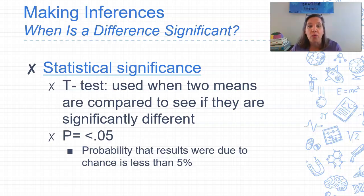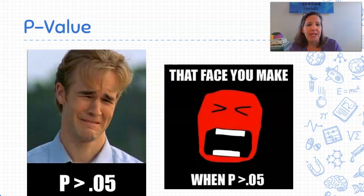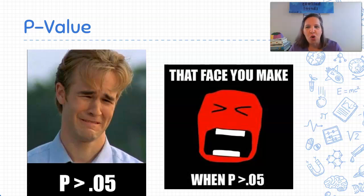So the p stands for probability. The probability that our results were due to chance is less than 5%. So what that's saying on the flip side, 95% sure my results are because variable A caused variable B, and that's just the threshold. It can be as long as our p value is less than 0.05. Here's just a couple of little memes to help you sort of remember that p value. So there's Dawson from Dawson's Creek, looking sad. And we've got like an angry face here when our p value is over 5%. We don't want it over. We want it less than.